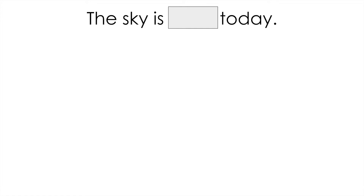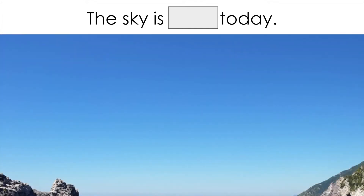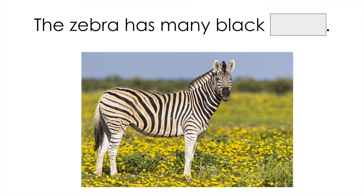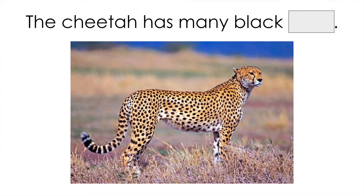What is the missing word here? The sky is clear today. C-L-E-A-R. Clear. The zebra has many black stripes. S-T-R-I-P-E-S. Stripes. The cheetah has many black spots. S-P-O-T-S. Spots.